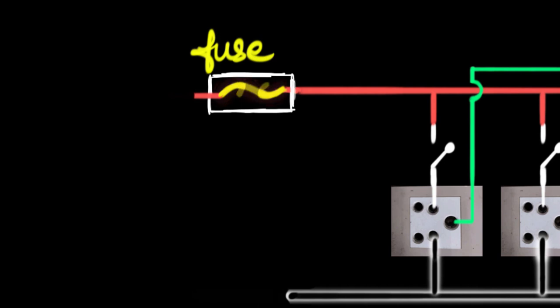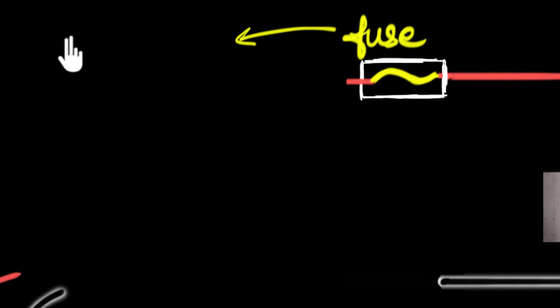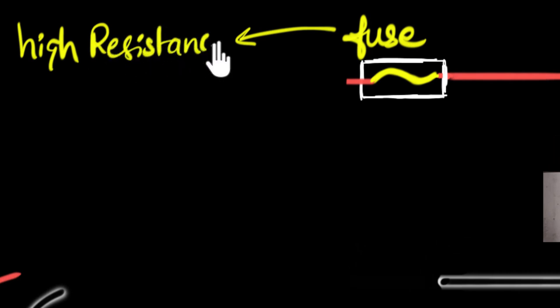And how do we build a wire like that? Well, a couple of important properties would be, one, it needs to have a very high resistance compared to the rest of the wires. Why? Because a high resistance ensures more heating effect. We have seen that before, right? As the current flows through any object, if it has more resistance, it will have more heating. So that ensures more heating.